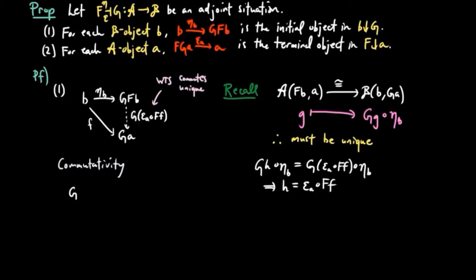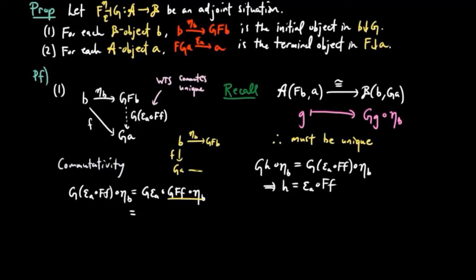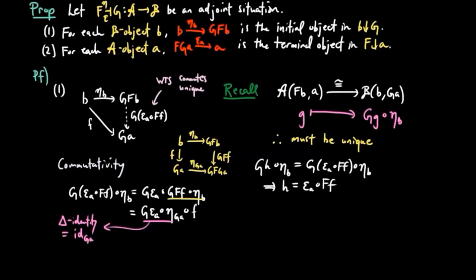So we only need to show the commutativity. We have G on epsilon(A, F) composed with eta_B, which equals G(epsilon(A, F)) composed with G(F) composed with eta_B. We use naturality of the unit eta to substitute eta(G(A, F)) for G(F) composed with eta_B. But G(epsilon(A)) composed with eta(G(A)) equals the identity on G(A), by the triangle identity of the adjoint situation. And so it is equal to F.